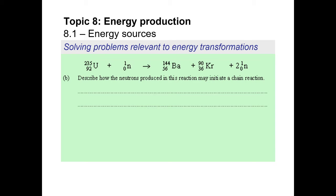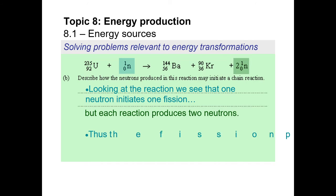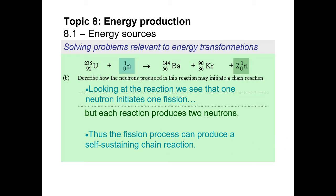Part C: describe how neutrons produced in this reaction may initiate a chain reaction. Uranium-235 accepts a neutron, becomes uranium-236, which is unstable. That unstable uranium-236 spontaneously decomposes into two radioactive products — possibly barium and krypton — plus two neutrons. Each of those neutrons, moving at the right speed, can combine with two more uranium-235 atoms and go through the process again, each producing two more neutrons. This eventually becomes a self-sustaining reaction — but hopefully not a runaway effect, which would be more like a bomb situation.